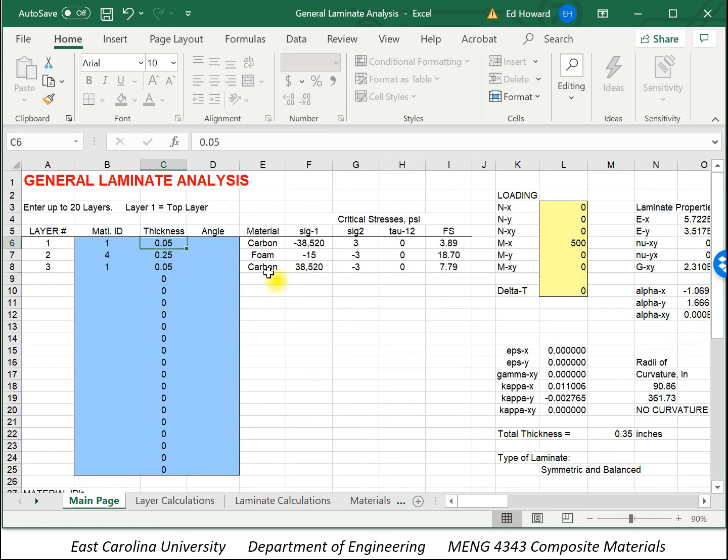Now, if I were to change this to a tenth of an inch, you notice we no longer have a symmetric laminate. Now, because all the fibers are in the zero direction, it still shows up as balanced.